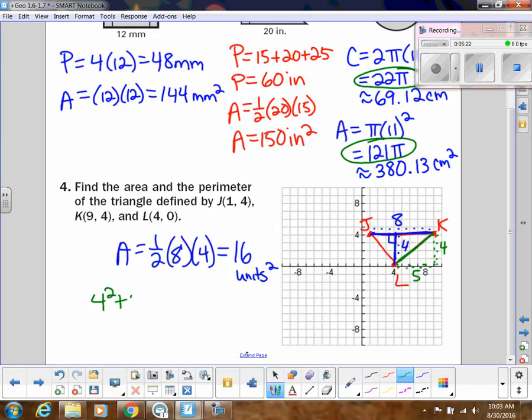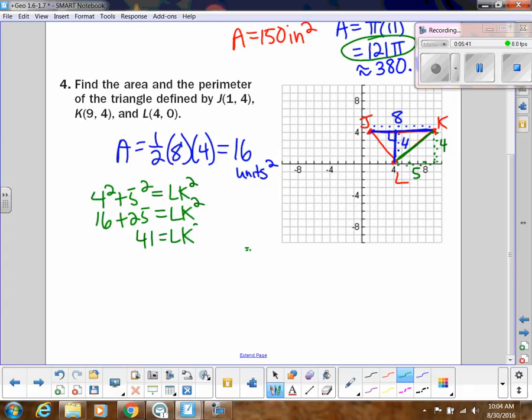So I would do 4 squared plus 5 squared equals my LK squared. So 16 plus 25, and that would be 41. And that's what K, L is squared. So make sure to square root that. So that would be the square root of 41. So that's LK.